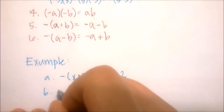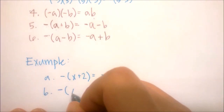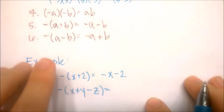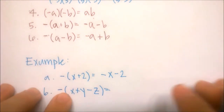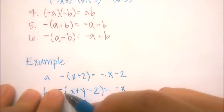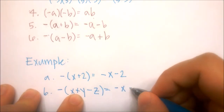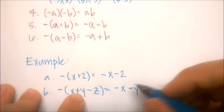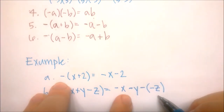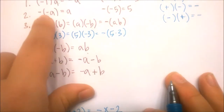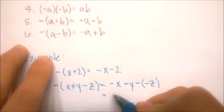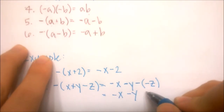Now a more complicated example: the negative of the expression x plus y minus z. We distribute the negative using property 5. Negative times x is negative x, negative times positive y is negative y. For the minus z term, we already have a negative, so negative times negative z gives positive z by property 2. The result is negative x minus y plus z.